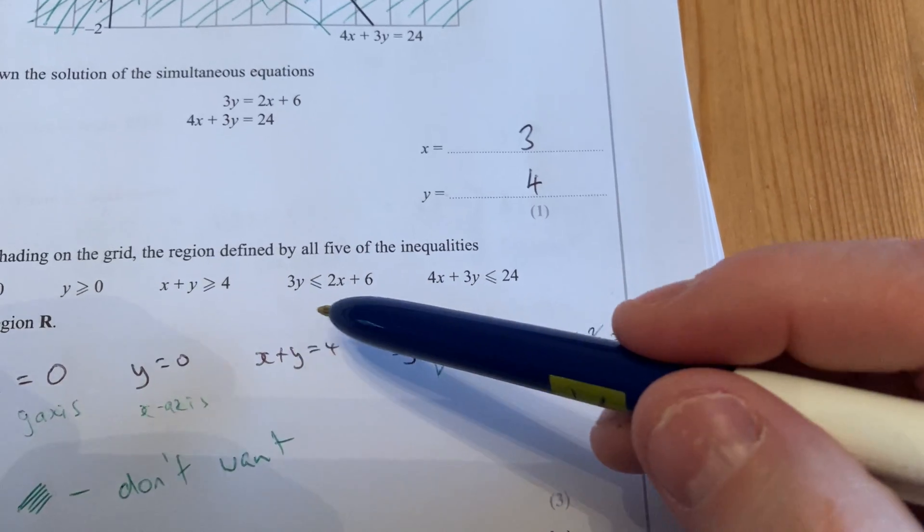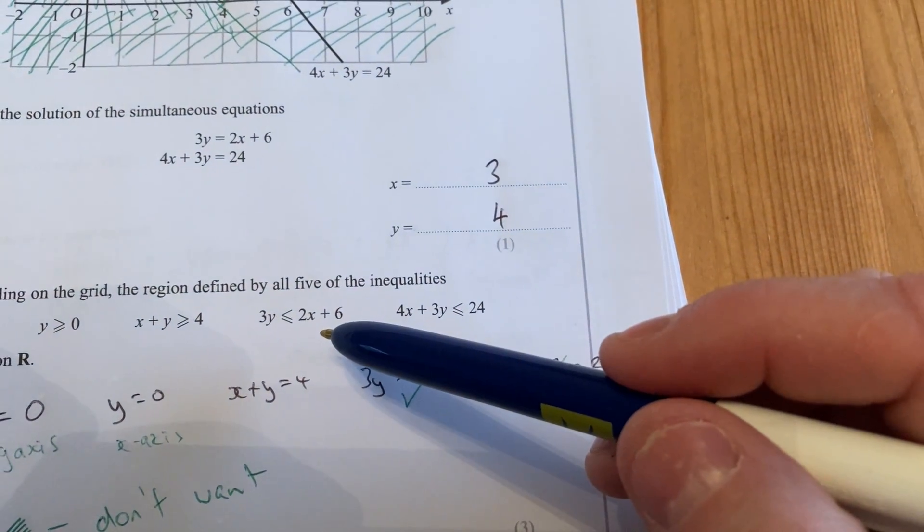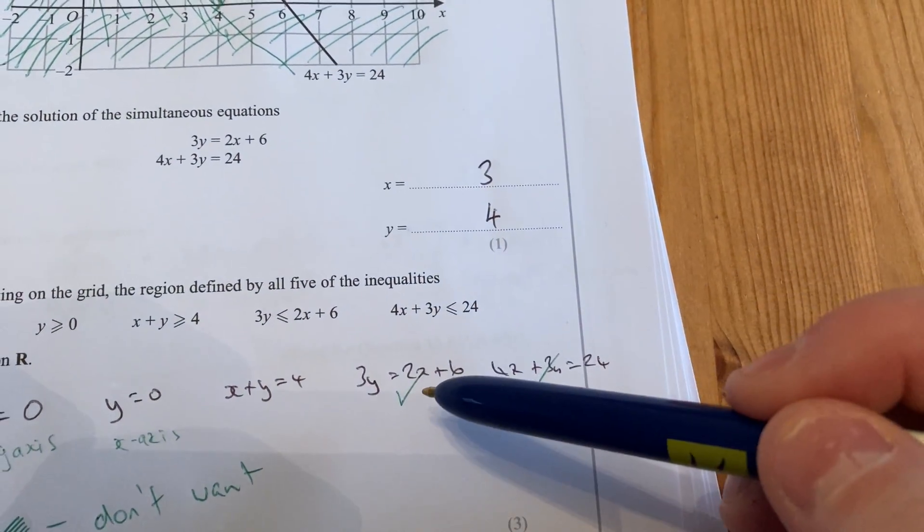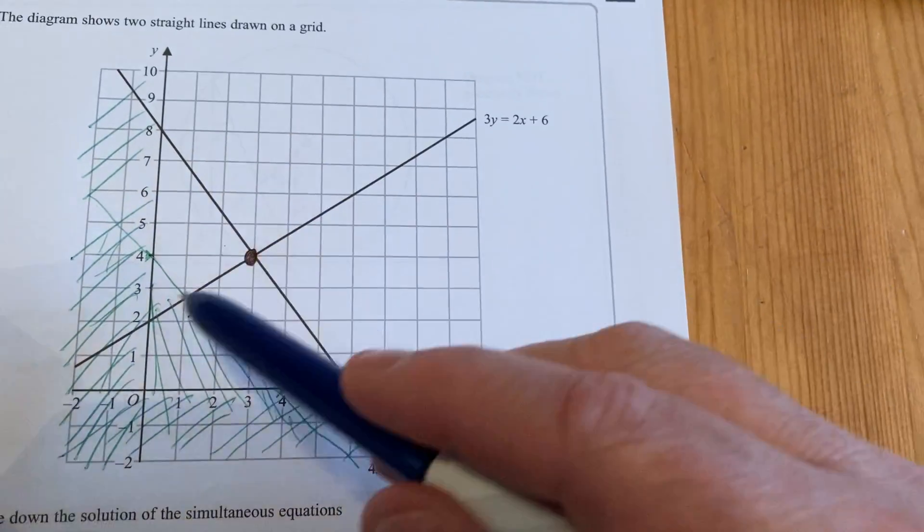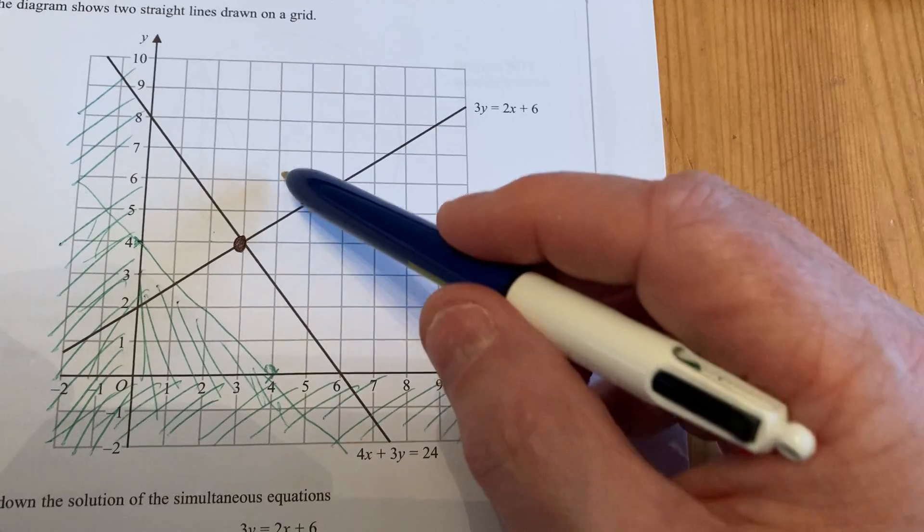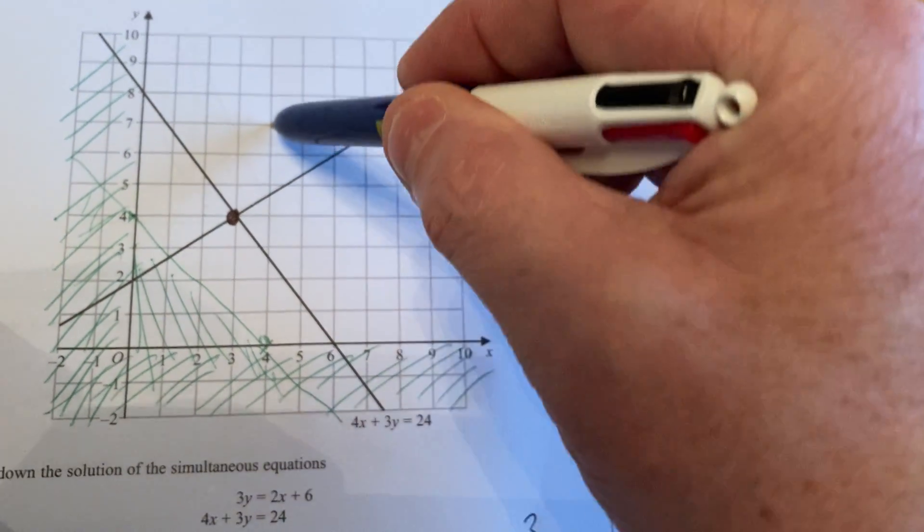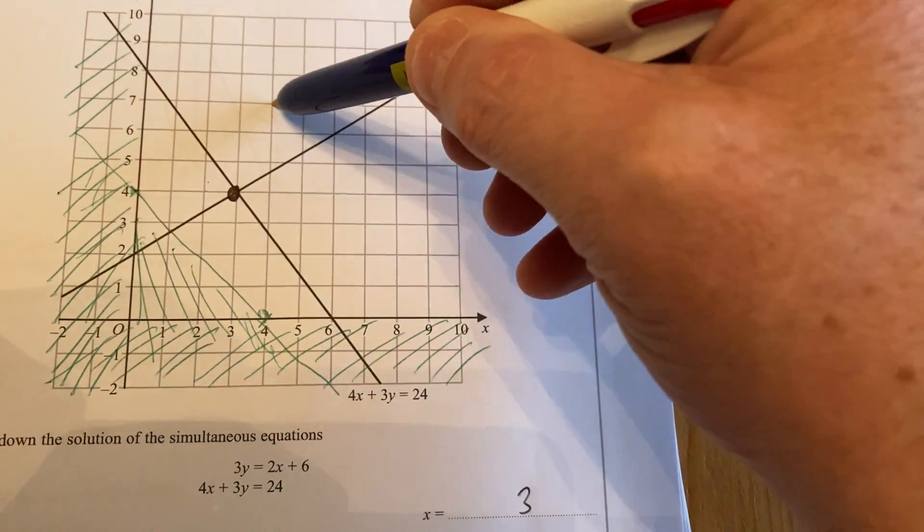Where are we? Next one, 3y plus 2x, 3y equals 2x plus 6. That's this diagonal line just up there. Again, I'm just going to try a point. I'm going to try that point there, that's the point 4, 7.